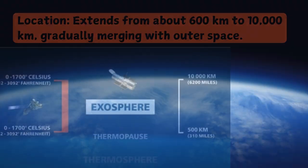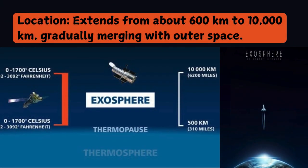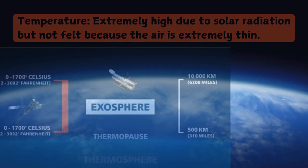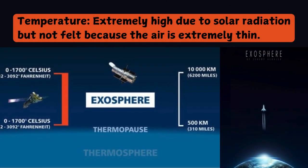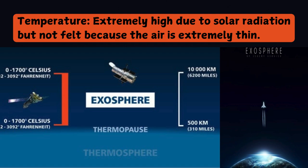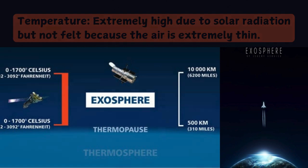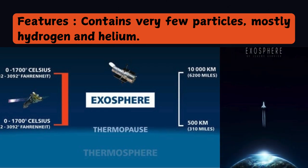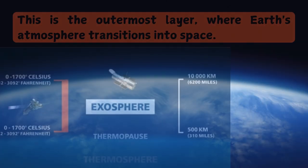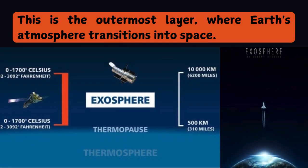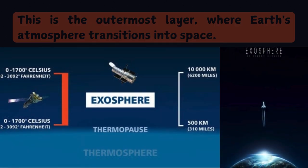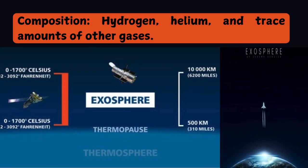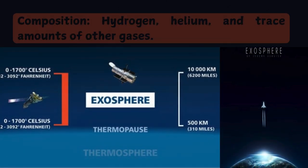Number five: Exosphere. Location: extends from about 600 kilometers to 10,000 kilometers, gradually merging with outer space. Temperature: extremely high due to solar radiation, but not felt because the air is extremely thin. Features: contains very few particles, mostly hydrogen and helium; this is the outermost layer where Earth's atmosphere transitions into space. Composition: hydrogen, helium, and trace amounts of other gases.